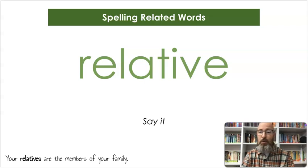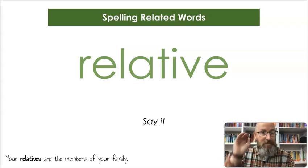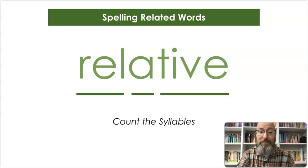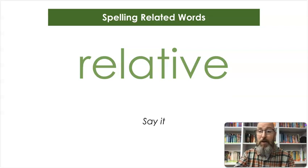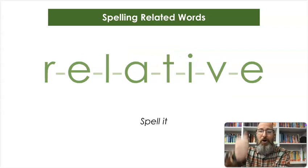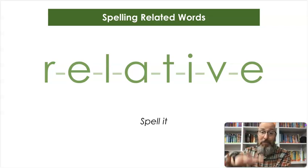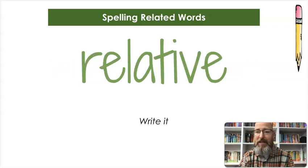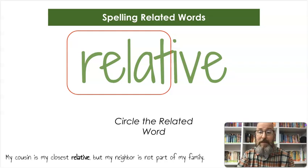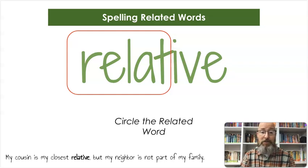Our next word is relative. Your relatives are the members of your family. Let's spell it: R-E-L-A-T-I-V-E, relative. And let's write it: R-E-L-A-T-I-V-E. We're going to circle the beginning of that word — that was part of the word relate. My cousin is my closest relative, but my neighbor is not part of my family.